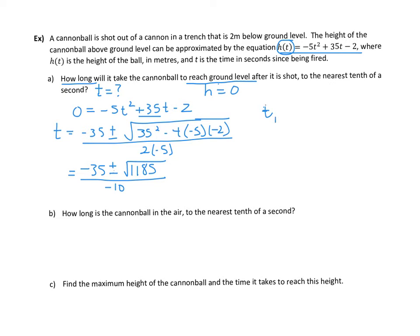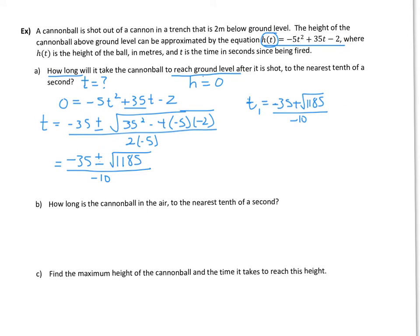So our two values of t, time 1, would be given by negative 35 plus the square root of 1185, divided by negative 10. Our other time is going to be given by doing the subtraction. And so we can pop that into our calculator and get our 2 times there. So I did my calculations here and I got 0.06, which if I round to the nearest tenth, it would be approximately 0.1 seconds. So that is a positive time, and the other one is about 6.9 seconds, if we are looking at rounding to one decimal place for each of those to the nearest tenth.